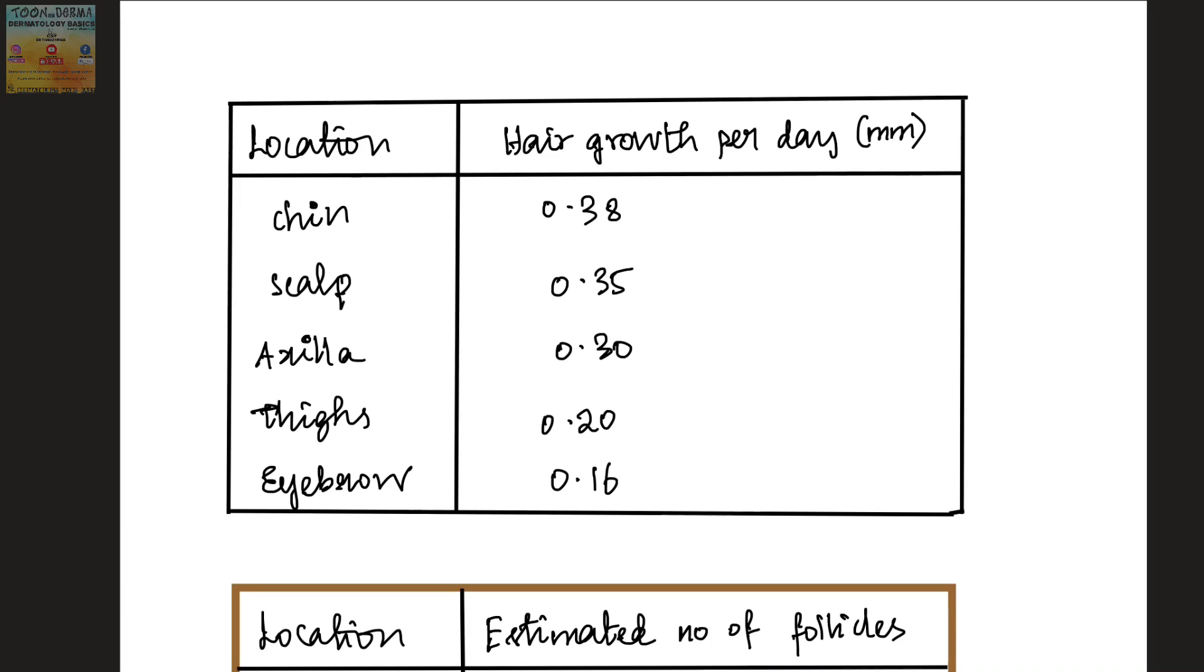Certain numerical facts about the hair follicles: hair growth per day is about 0.35 mm in the scalp, 0.38 in the chin, 0.30 in axilla, and in eyebrows it is the lowest at about 0.16 mm per day.